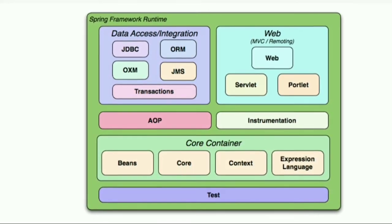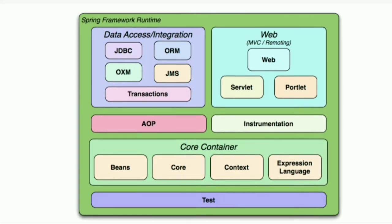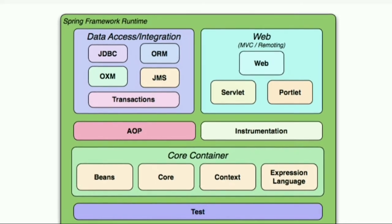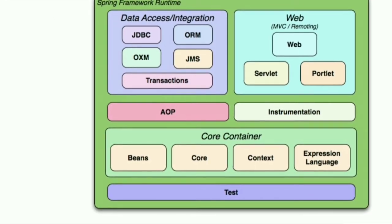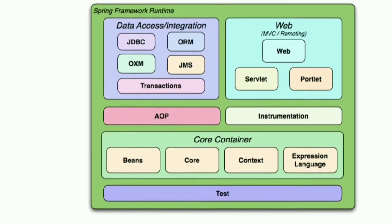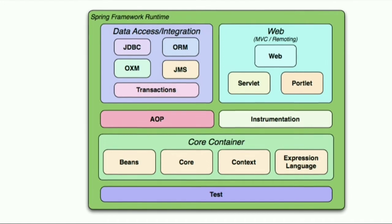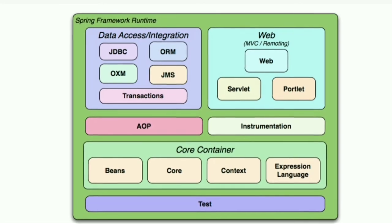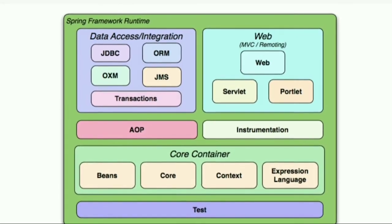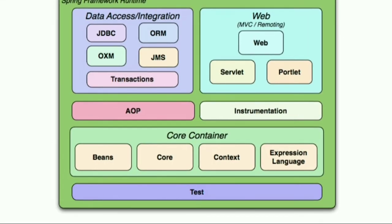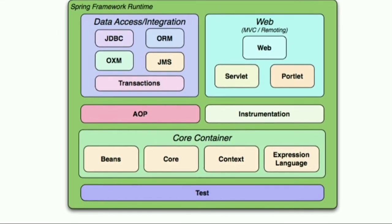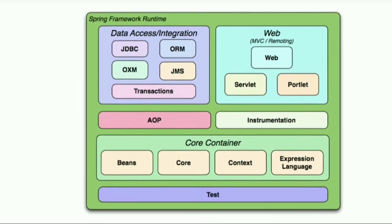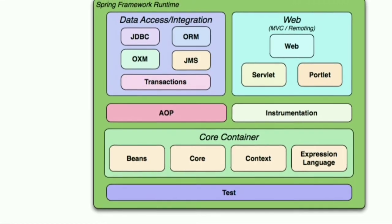The main items in the Spring Web module are the MVC module — Model View Controller — along with Web Flow and the Portlet module. Another main module is AOP — Aspect Oriented Programming — which is used in business logic.